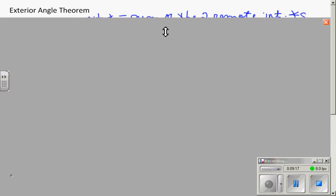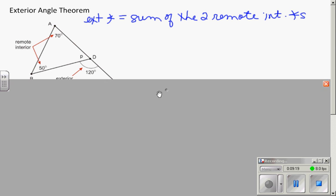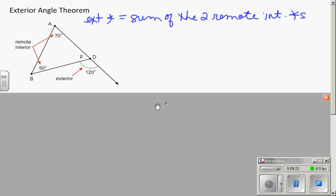One more theorem. And this is the exterior angle theorem. The exterior angle is equal to the sum of the two remote interior angles. And this is exactly what it sounds. Exterior is outside the triangle.